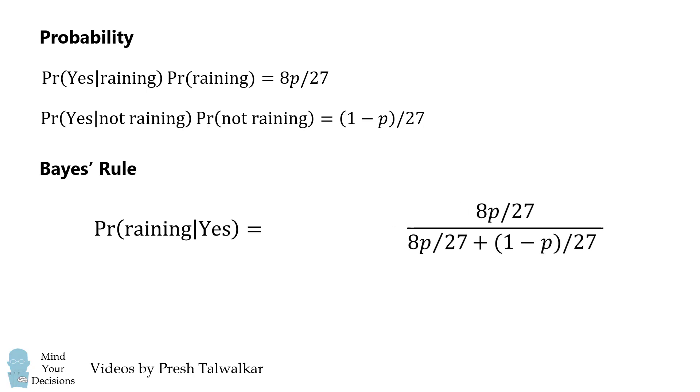Notice that the 27s cancel out, and we're left with the formula 8P/(7P+1), and that's the answer.